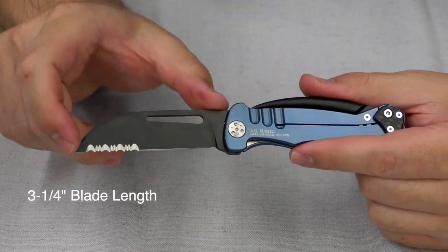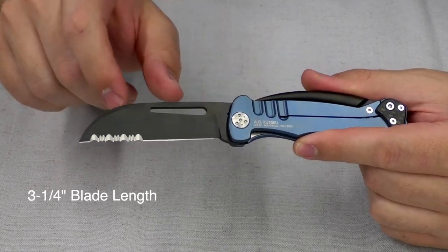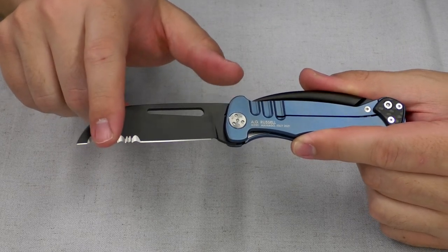This is a three and one-quarter inch blade. It's a sheep's foot, flat ground. We have forward serrations here, so excellent for cutting rope. That's going to be the main purpose of this blade.